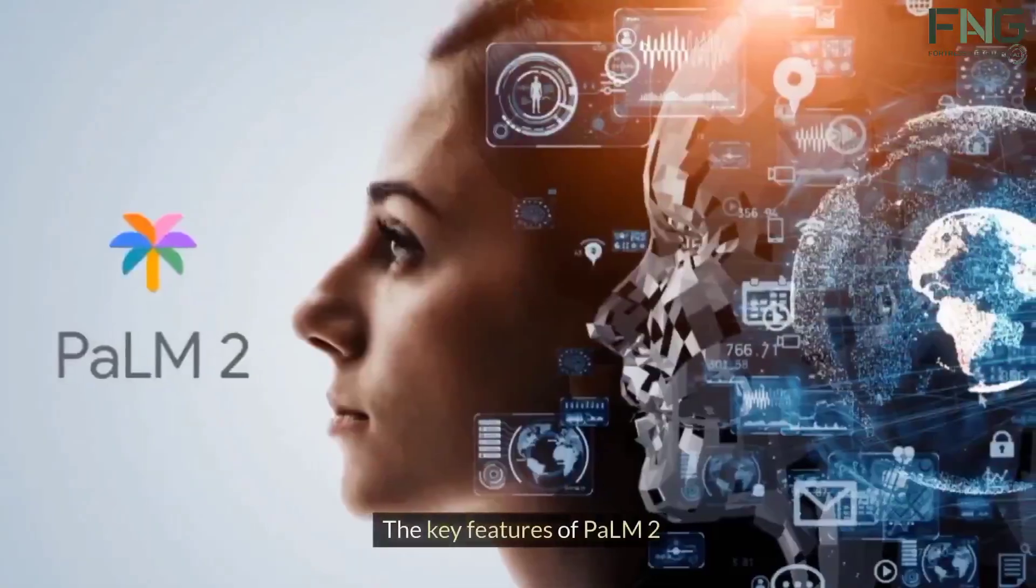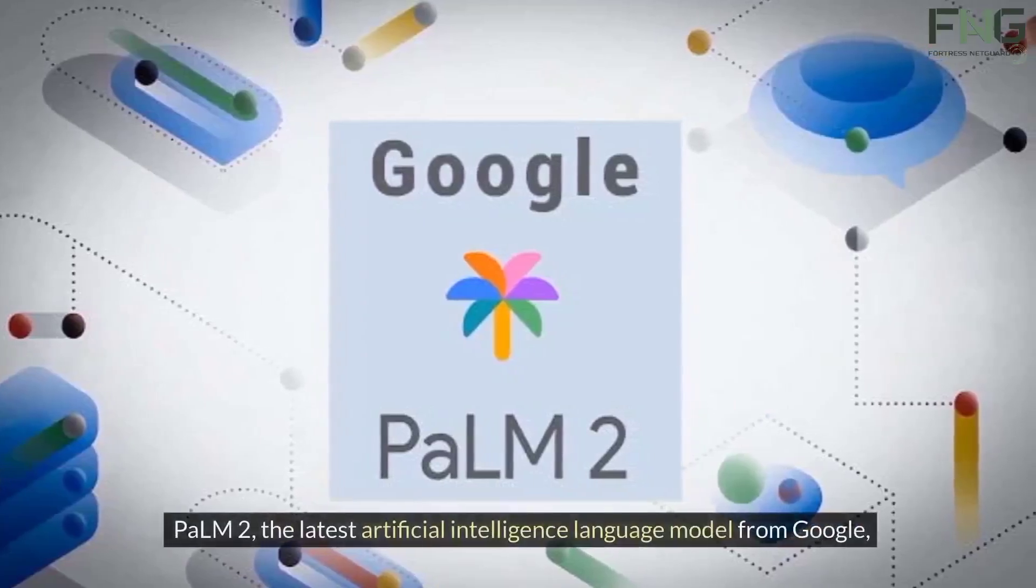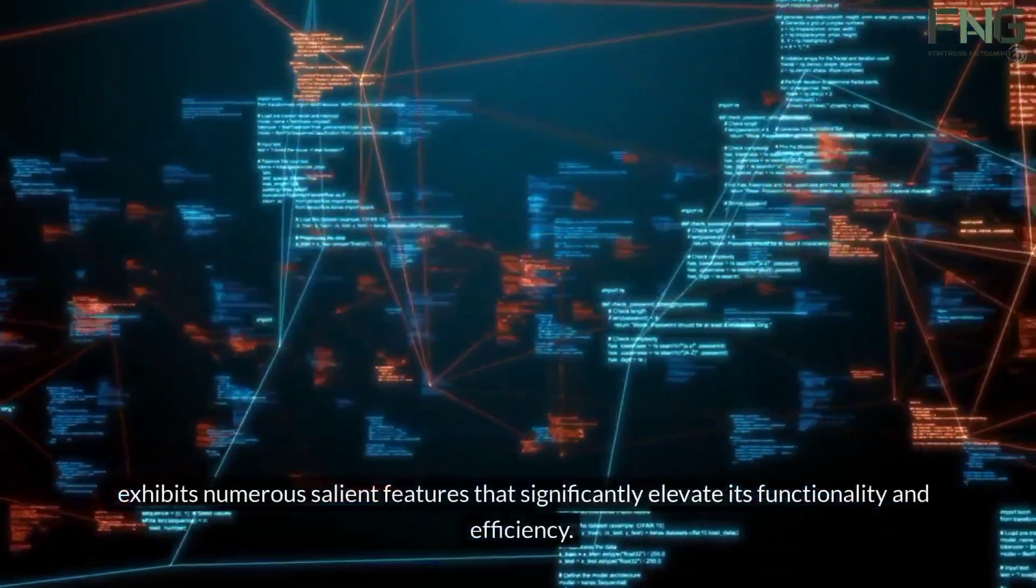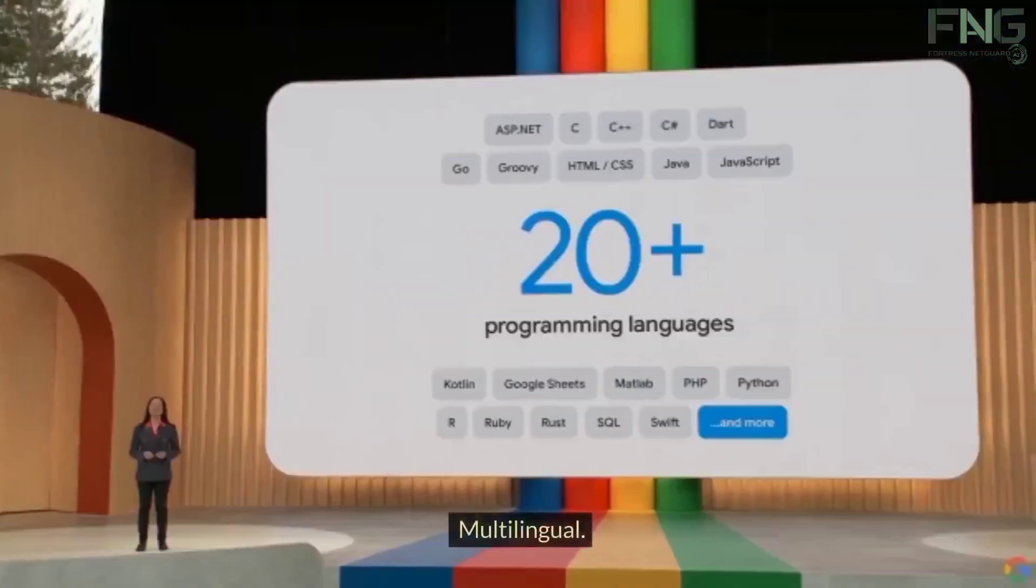The Key Features of Palm 2. Palm 2, the latest artificial intelligence language model from Google, exhibits numerous salient features that significantly elevate its functionality and efficiency.